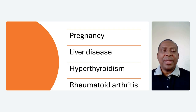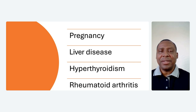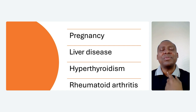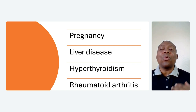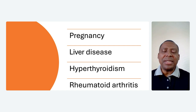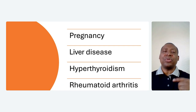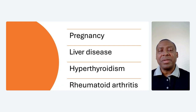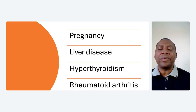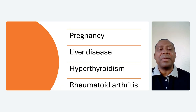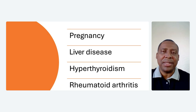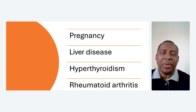It can occur in another condition called hyperthyroidism. Hyperthyroidism simply refers to a condition where the thyroid gland, a small gland located at the front of the neck, becomes overactive. So in patients that have hyperthyroidism, in addition to other manifestations, they could also have redness of their palms.